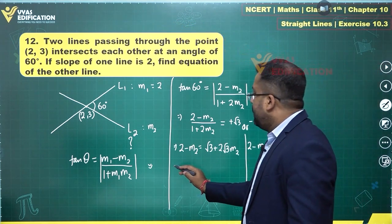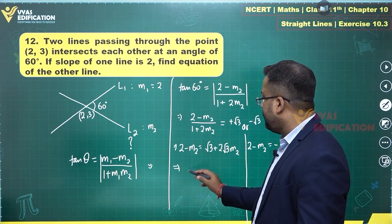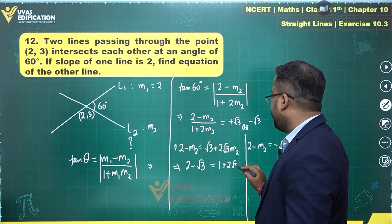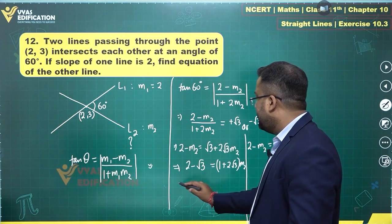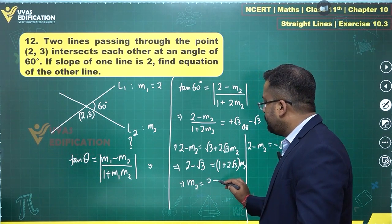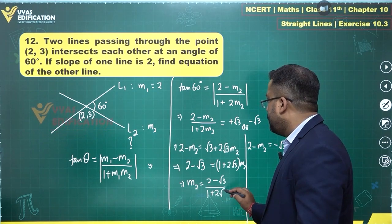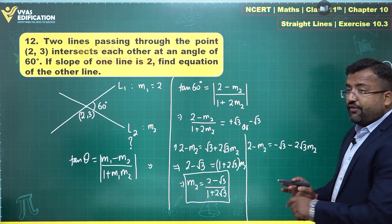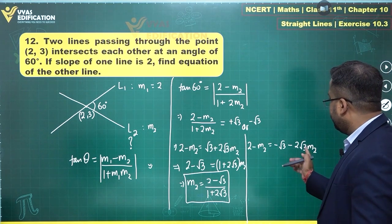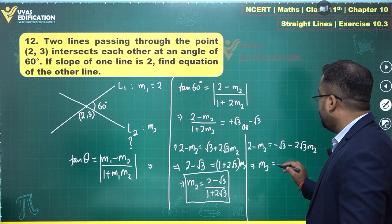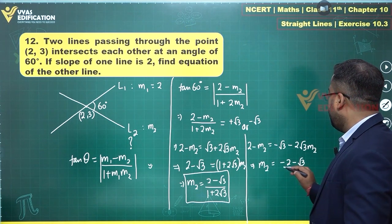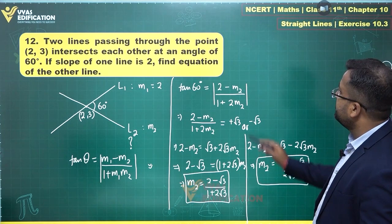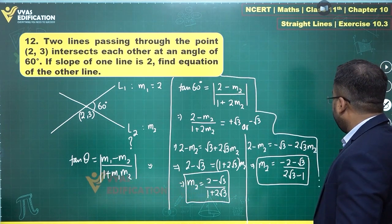Solving the first case: 2 − √3 = (1 + 2√3)·m2, so m2 = (2 − √3) / (1 + 2√3). From the second case: m2 = −(2 − √3) / (2√3 − 1), which simplifies to (2 + √3) / ... giving the other value of m2.